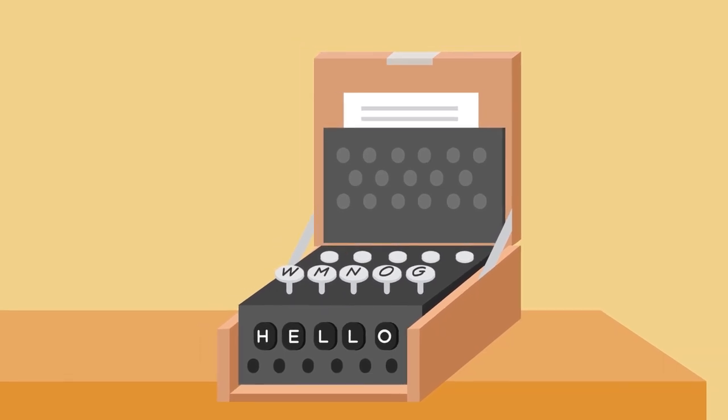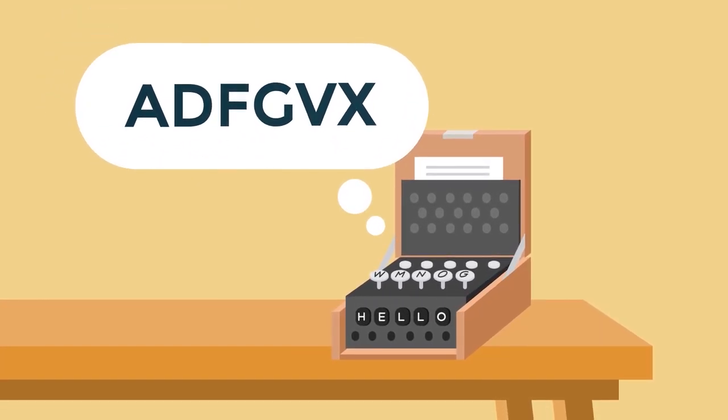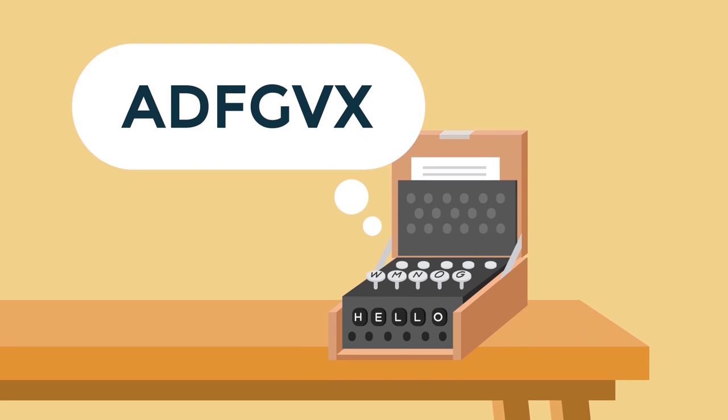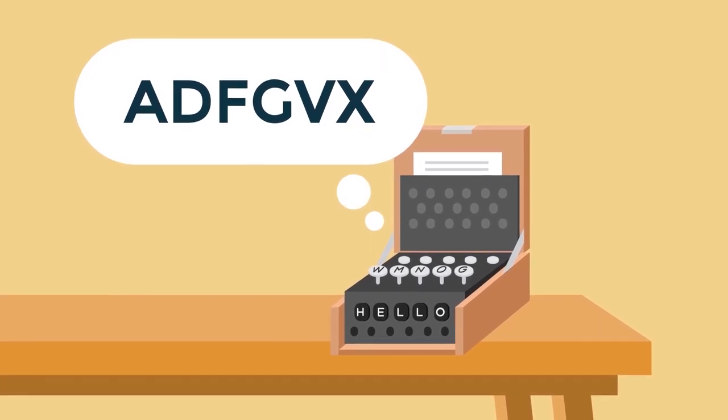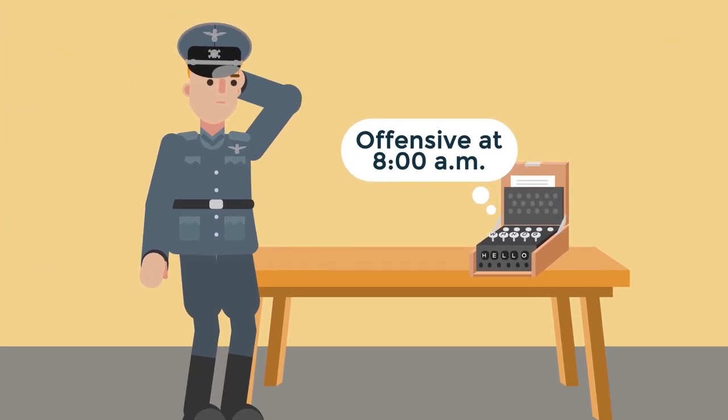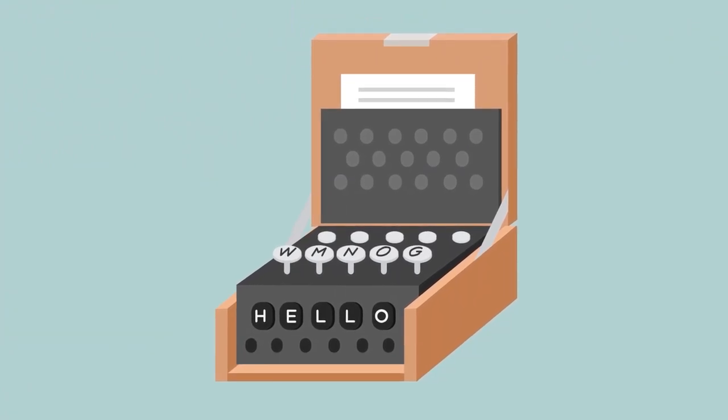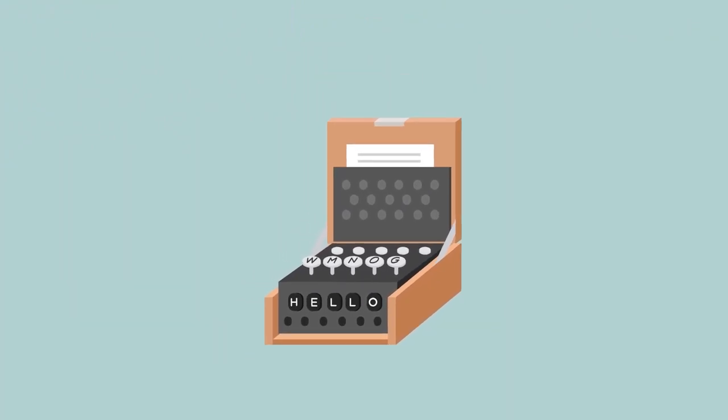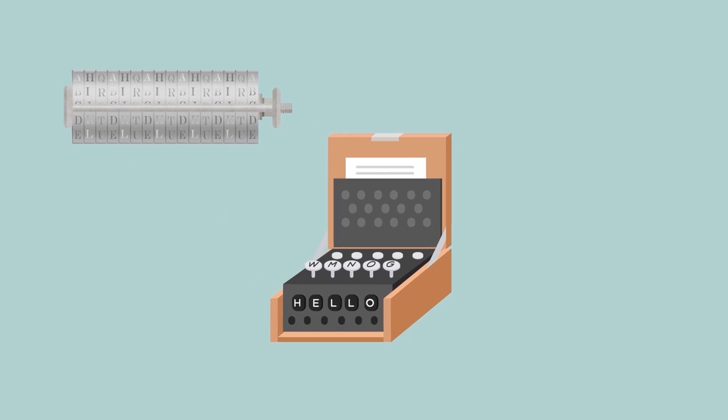Enigma featured a revolutionary encryption method. During World War I, the Germans used the ADFGVX cipher, based on the substitution and rearrangement of letters. It was hacked back in 1918, and the general staff needed a new solution. Enigma used a multi-alphabetic substitution cipher, driven by a mechanism.